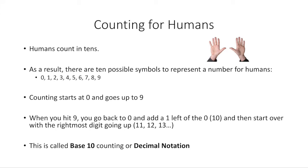When you hit 9 again, you move to the next digit to the left, and so on. If you hit 99, both digits go to 0 and you add another 1 to the left. This is called base 10 counting — or decimal notation — because 'deci' also means 10.